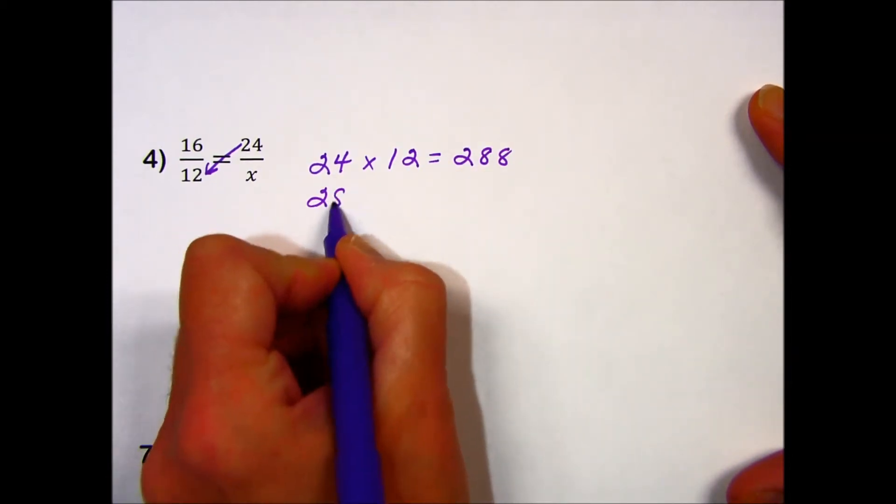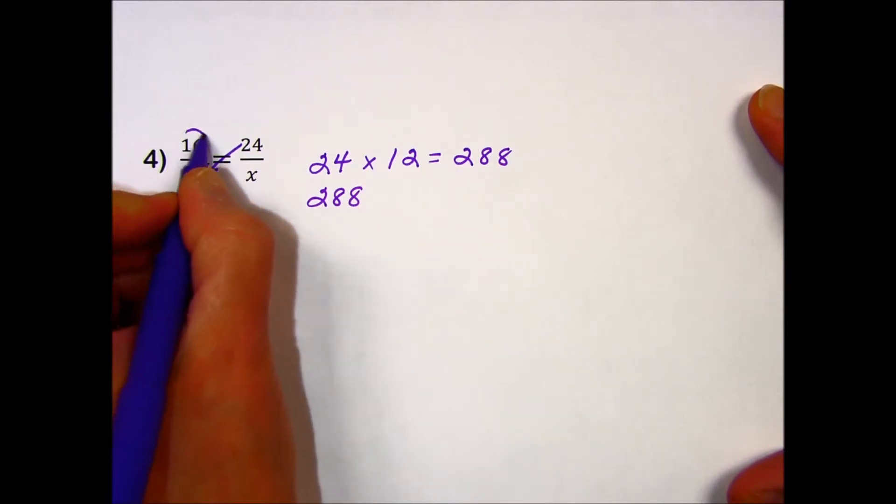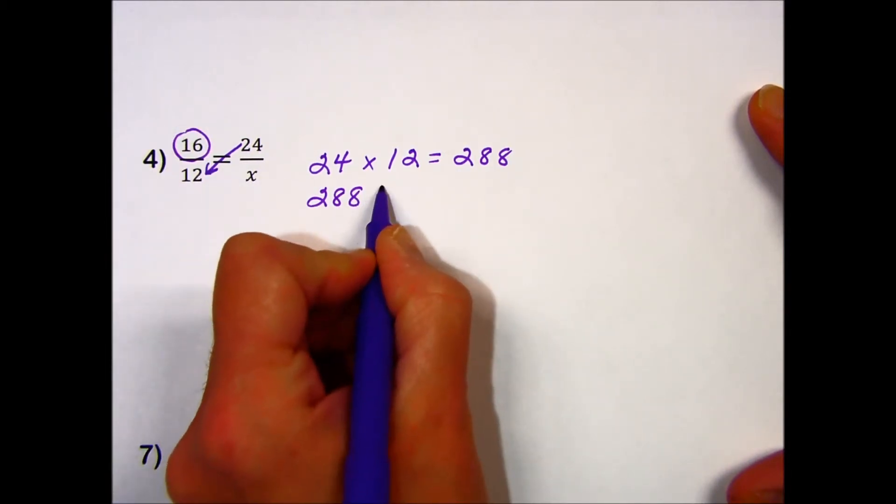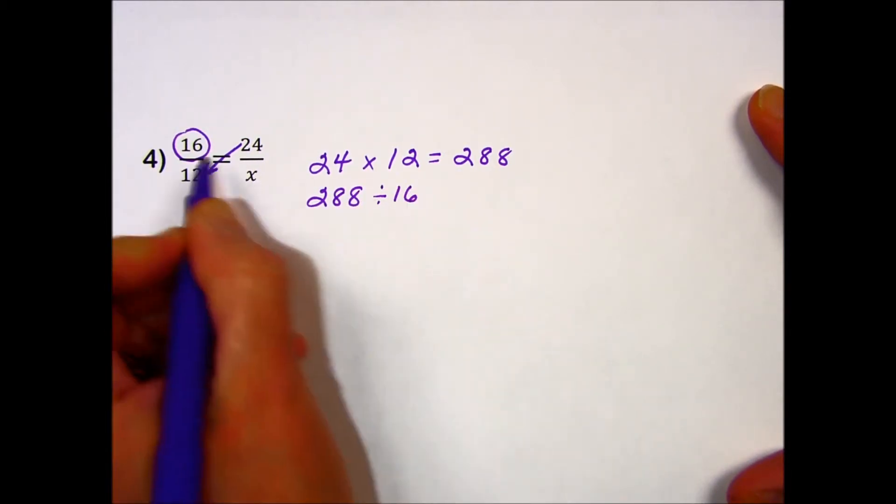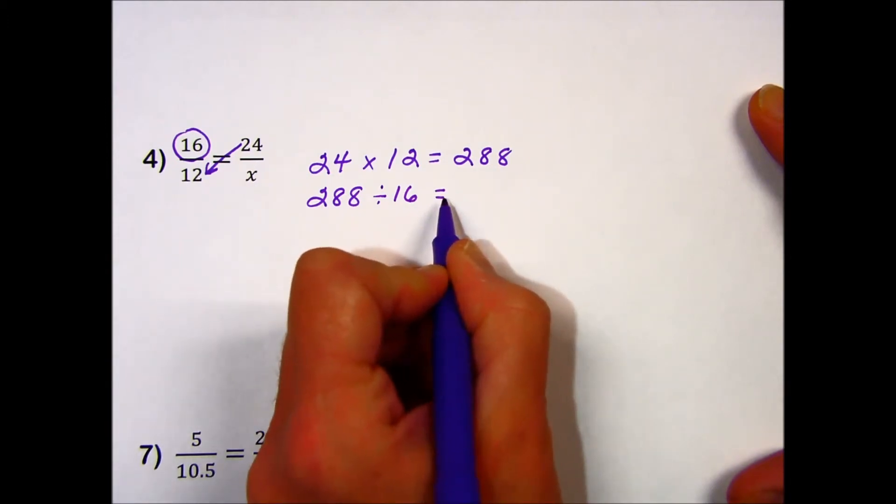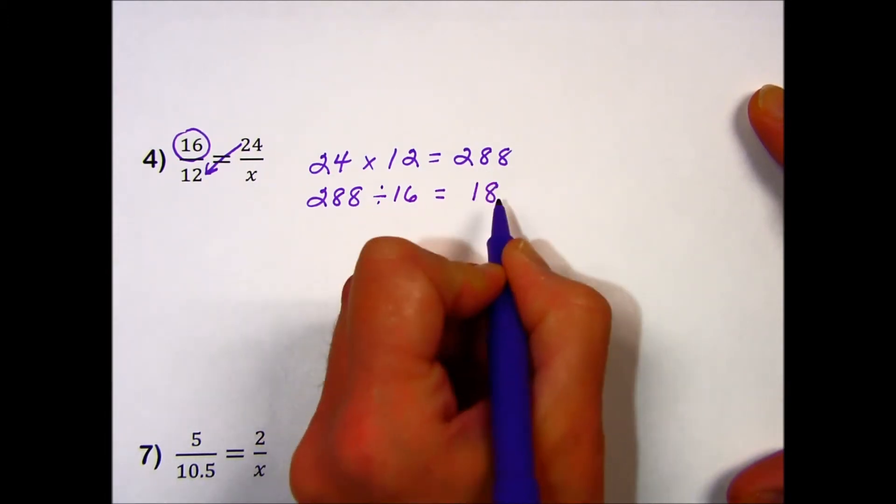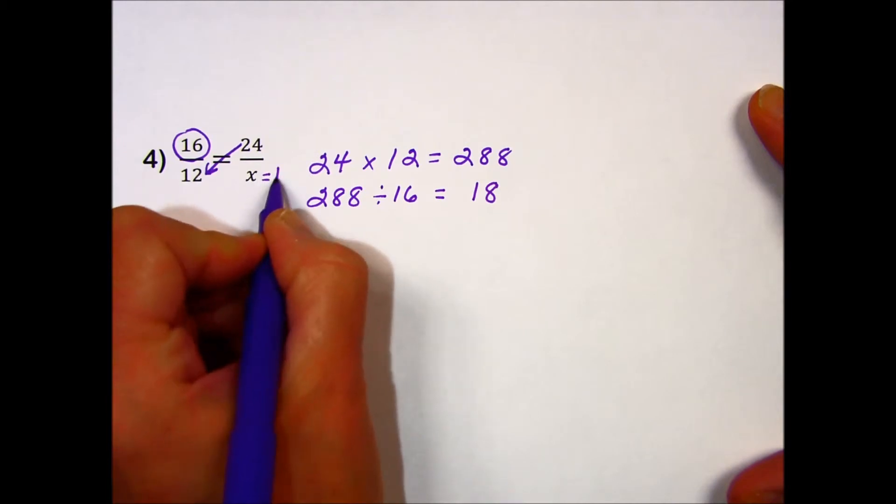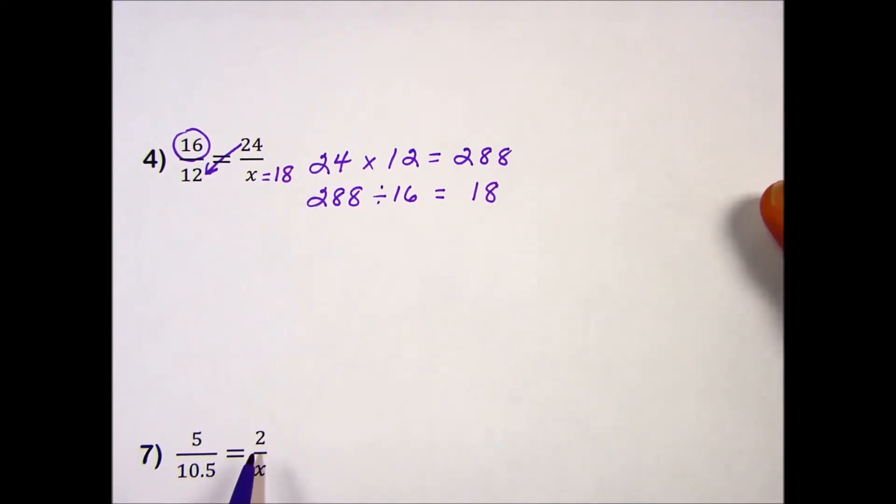We take that result and divide it by the number we haven't used, which is part of the other diagonal with the missing quantity. That gives us 18, which is the value of our missing element in this proportion.